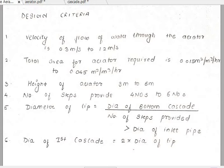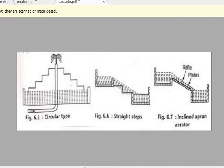First of all I would like to brush up your concept regarding the cascade aerator — how it looks like and what are the components which we have to design based on the design criteria issued by the Indian standards. This is the circular type cascade aerator. It consists of various types of cascades, that is steps — generally four to six cascades are provided in the cascade aerator.